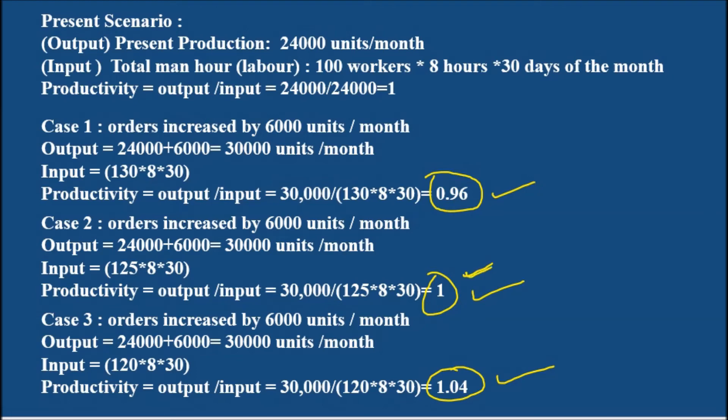If you look at the second case where the productivity is 100%, this is going to be the most effective condition because the productivity here is 100%. In both the cases, that is case number one and three, the productivity has either crossed or is below unity. So the productivity level will not be as it is expected to be. This is a very simple problem and I hope that you understood this problem clearly.